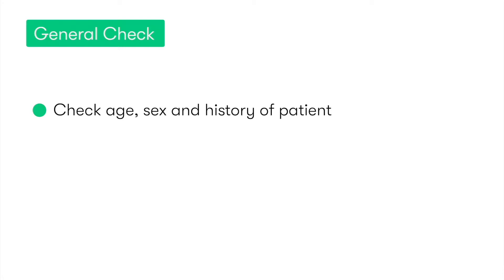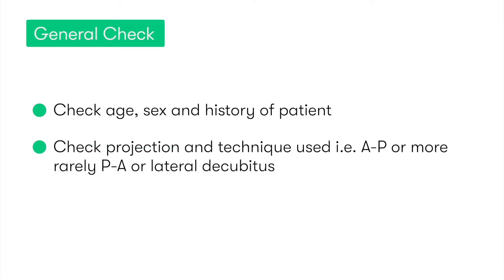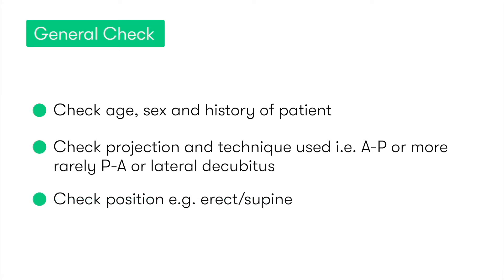Starting with the general check, we want to clarify the patient's age, sex, and also what the history of the patient is — basically what's the reason for performing the abdominal X-ray in the first place. Then we want to check the type of view used: is it AP, or very rarely a PA or lateral decubitus? Lastly, we want to see if this has been an erect abdominal X-ray or if the patient is lying supine.